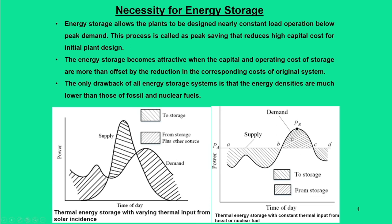When demand is higher, these plants cannot cater to peak demands. For that reason, when there is continuous generation of power, we can store it, and during peak demand periods it can be discharged. During peak demand, energy has to be supplied from storage, and during normal situations, fossil fuel or nuclear power plants can cater to base load operation.